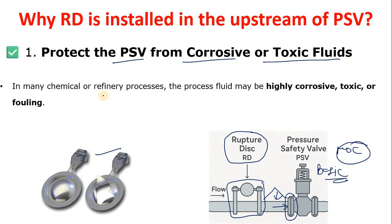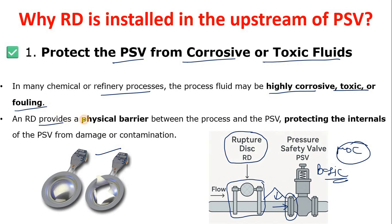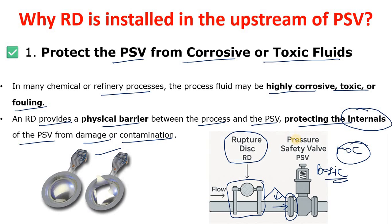In many chemical or refinery processes the fluid may be highly corrosive, toxic, or fouling. An RD provides a physical barrier between the process and the PSV, protecting the PSV internals — such as the seat, spring, and bonnet — from damage or contamination. Over time, if the PSV is leaking and the fluid is corrosive or toxic, the internal parts will also be affected.